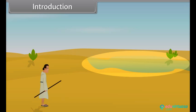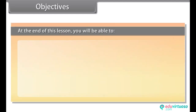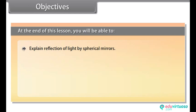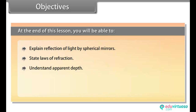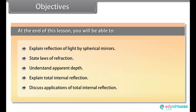Throughout this module we learn reflection and refraction of light. At the end of this lesson, you will be able to explain reflection of light by spherical mirrors, state laws of refraction, understand apparent depth, explain total internal reflection, and discuss applications of total internal reflection.